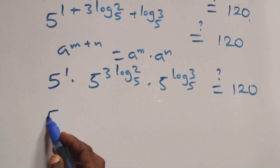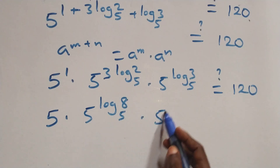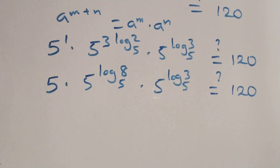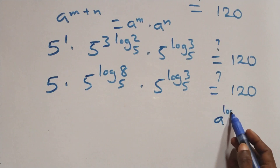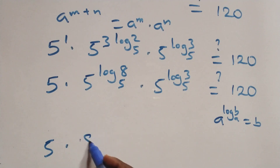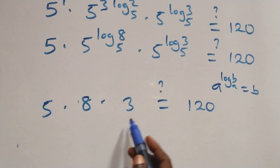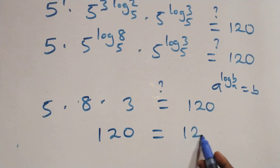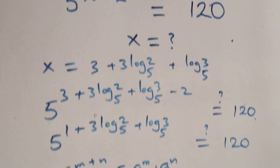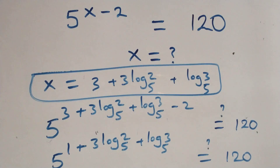Here 5 raised to power 1 is 5. We can rewrite 5 raised to power 3 log₅ 2 as 5 raised to power log₅ of 2 cubed, which is 5 raised to power log₅ 8, times 5 raised to power log₅ 3, equals to 120. This follows the rule: a raised to power log base a of b equals b. So this becomes 5 times 8 times 3, equals to 120. And 5 times 8 is 40, times 3 is 120, which equals 120. Left hand side equals right hand side, and therefore we conclude that x equals to 3 plus 3 log₅ 2 plus log₅ 3 satisfies this given problem.